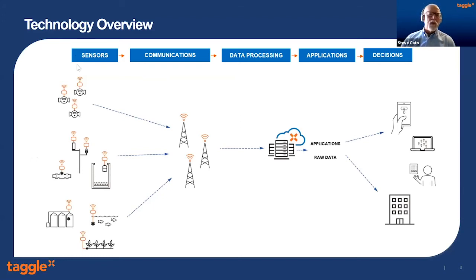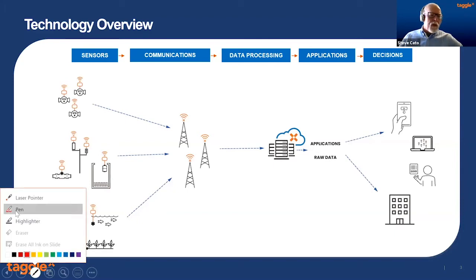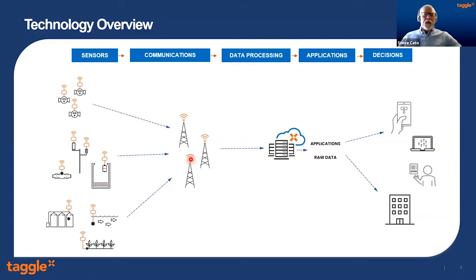This is our technology overview. On the left-hand side we have the field — what we're talking about today — and we've got lots of different types of sensors. Most of what we deal with is water meters, and all of them we put a radio tag on. We're talking about radio communications getting that signal back to our receivers, which sit up generally on your assets receiving all those signals from water meters and other data.